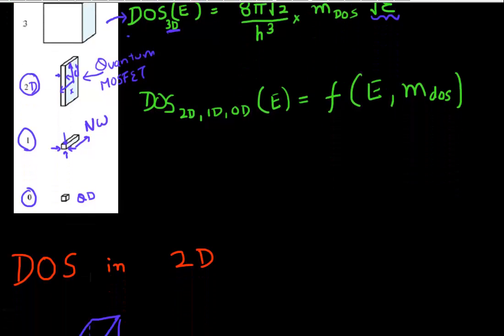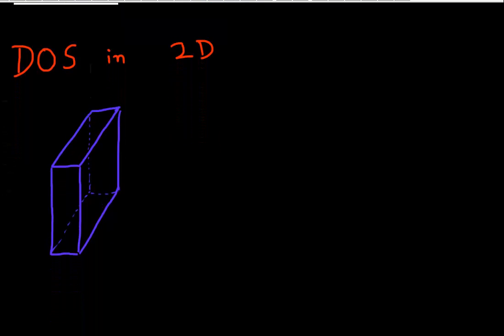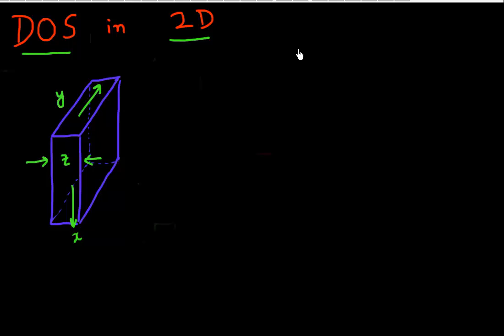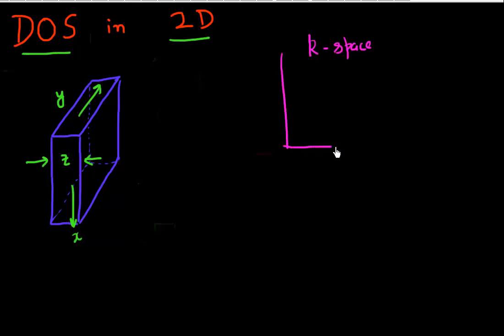Let's start with the case of a two-dimensional semiconductor. Shown here is a two-dimensional slab of semiconductor. The motion of electrons is confined in the z direction but free to move in the x and y directions. I'm going to use pretty much the same analysis as the three-dimensional case. Going back to k-space: for a two-dimensional semiconductor in real space, I also have a two-dimensional k-space with k_x and k_y.